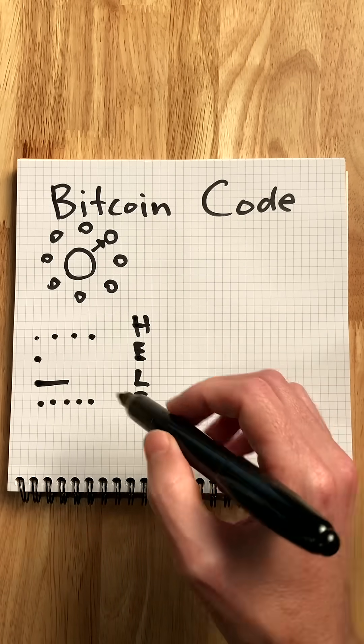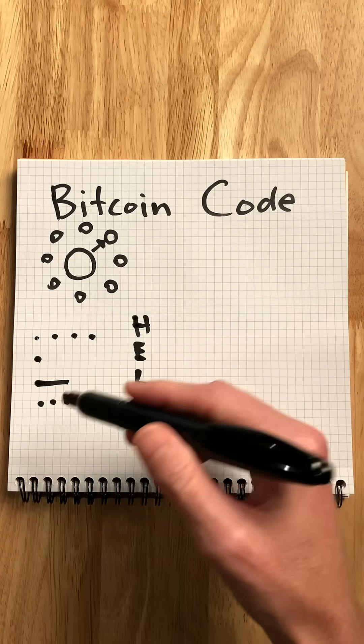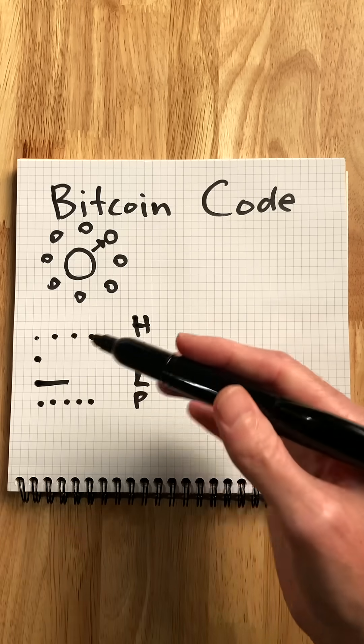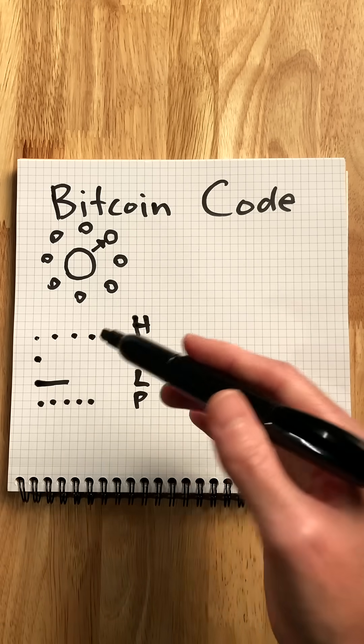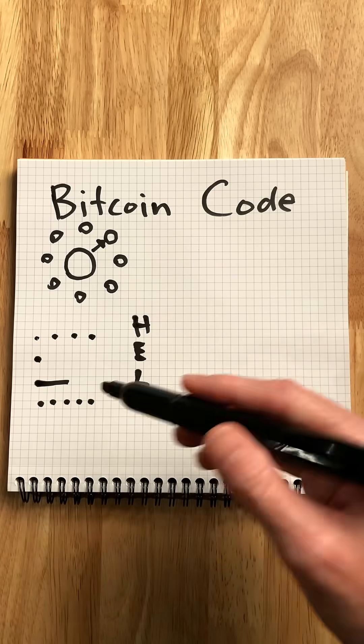Money itself is only as useful as its network of people willing to barter against those specific units of money. The bits of code that program Bitcoin are meaningless unless enough people agree to the terms, the shared code, the rules of that system.